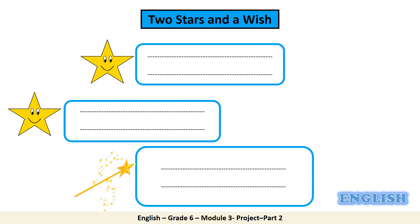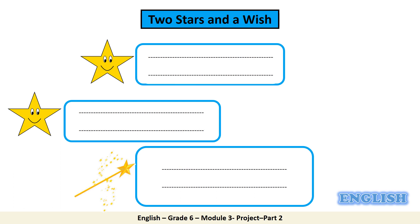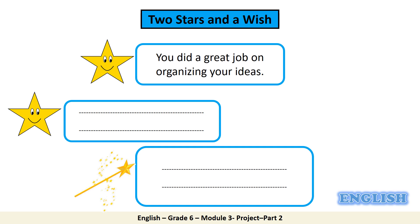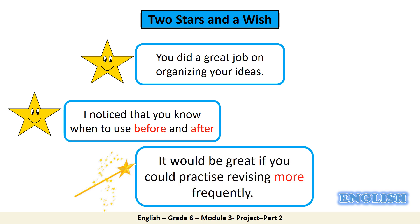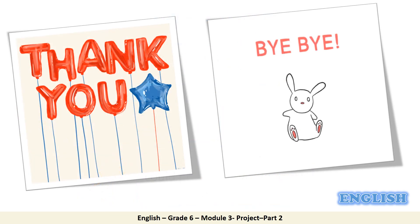Let me now give you some feedback about your writing. I'm going to use two stars to tell you two things you were very good at. In the wish box, I'm going to tell you one thing you need to improve. The first star is for the good organization of your ideas. The other one is for knowing when to use before and after. My wish for you is it would be great if you could practice revising more frequently. You were amazing today — thank you so much. Bye.